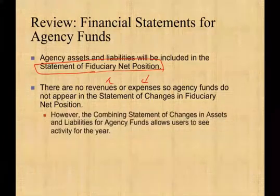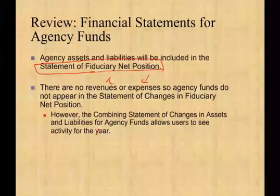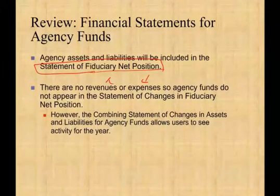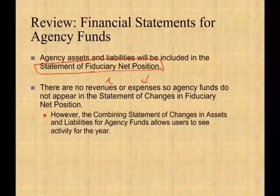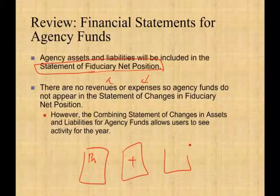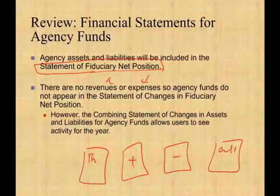So what is a tax agency fund? Agency assets and liabilities will be included in the statement of fiduciary net position. There are no revenues and no expenses, so agency funds do not appear in the statement of changes in fiduciary net positions. However, a combining statement of changes in assets and liabilities for agency funds allows users to see the activity for the year — showing what happened at the beginning, the additions, the subtractions, and the ending balance.